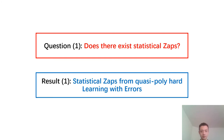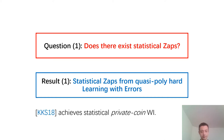Our first result is statistical ZAPs from cross-polynomial hardness based on the learning with errors assumption. And in the work of KTS18, they achieve a statistical private-coin witness indistinguishable protocol.